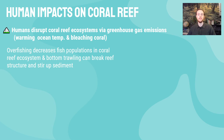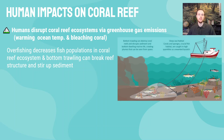Another way humans disrupt coral reef ecosystems is through overfishing and bottom trawling. Bottom trawling drags a huge net along the ocean floor, physically breaking portions of the coral reef and dislodging them from the rest of the reef. It also kicks up a lot of sediment, making the water dark and murky, potentially clogging fish gills and limiting sunlight penetration — harming the algae that depend on it.